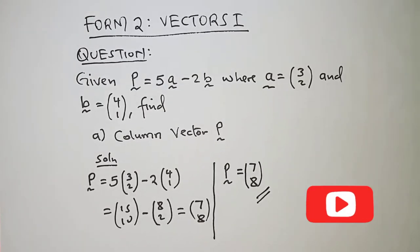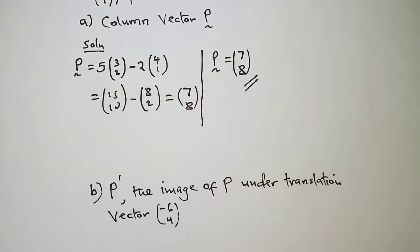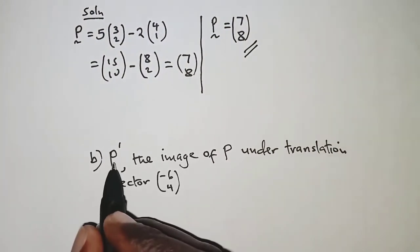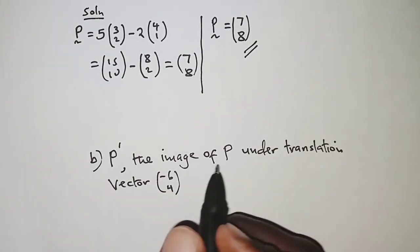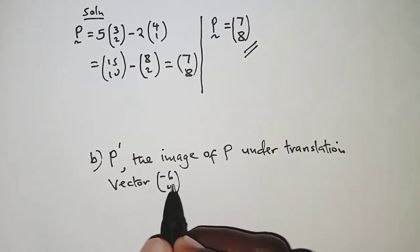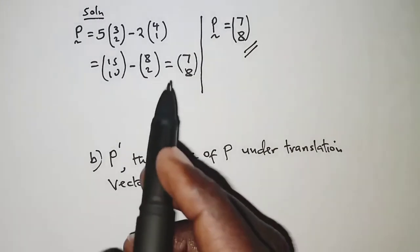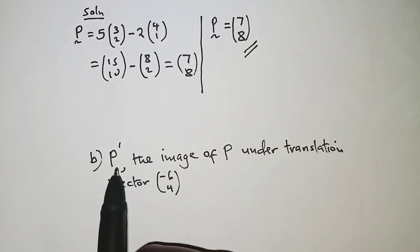Next, we are told that P prime is the image of P under the translation vector (-6, 4). So the question is, we find P prime.